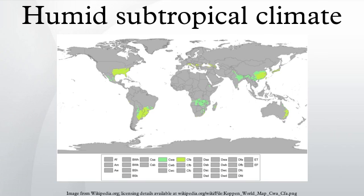Humid subtropical climates can also be found in South Asia, primarily along the Ganges River. However, they differ markedly from those in East Asia. Winters here are typically mild, dry, relatively short, and also tend to be foggy. Summers tend to be long and very hot, starting from mid-April and peaking in May and early June with high temperatures often exceeding 40°C. They also tend to be extremely dry, complete with dust storms — traits usually associated with arid or semi-arid climates.